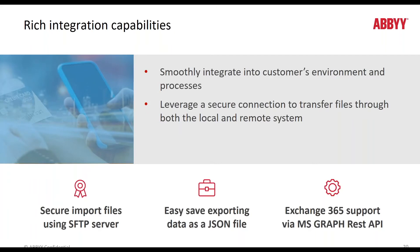We also now have improved integration abilities for enterprise infrastructure. The first improvement is SFTP support — previously we always supported FTP, but native SFTP support makes the file transfer process more secure. Next, we can now smoothly export data to JSON; for years we exported to XML, but now there is an additional option to export raw data to JSON. Finally, Update 2 includes the ability to integrate with MS Graph REST API to Exchange 365, allowing you to import emails from Exchange 365 online in a much more secure manner than previously.